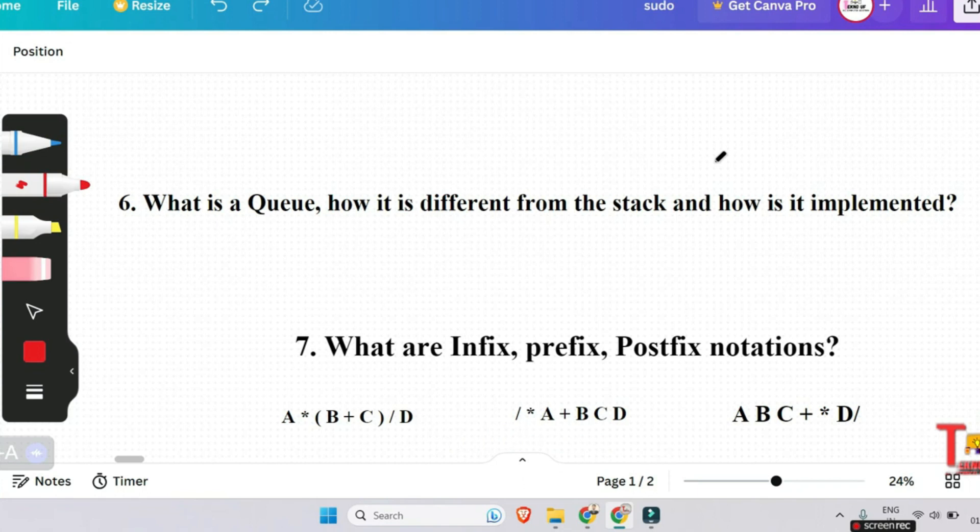The queue is a linear data structure that follows the order FIFO, first in first out, to access elements. Mainly operations like enqueue, dequeue, front, rear are operated here. The difference between stacks and queues is in removing. In a stack, we remove the item the most recently added. In a queue, we remove the item the least recently added. Both queues and stacks can be implemented using arrays and linked list.